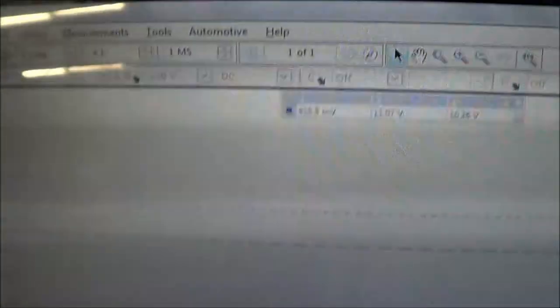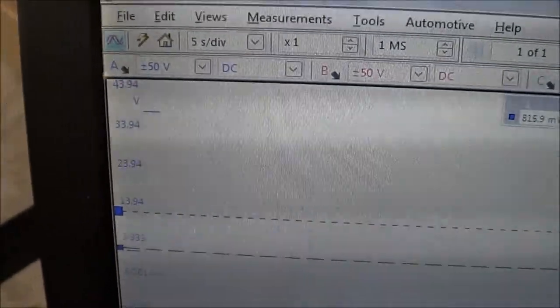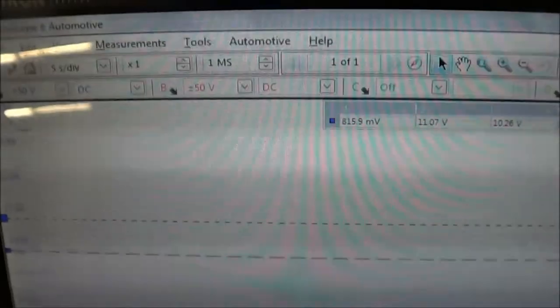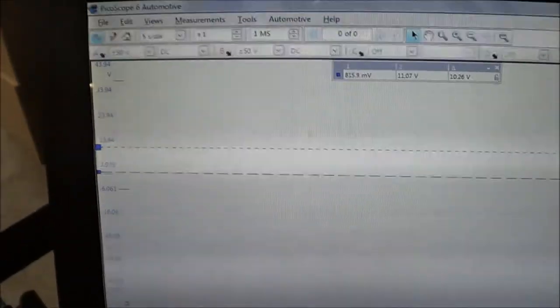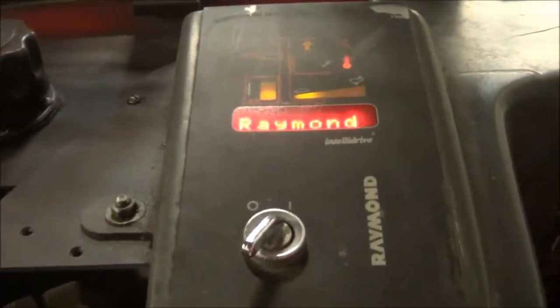Alright, so let's try that right now. Settings on the oscilloscope: 50 volts on channel B and channel A, same thing. Five seconds per division. Okay, let's try to run this right now. So it's going. Okay, let's try to key on. And switch.